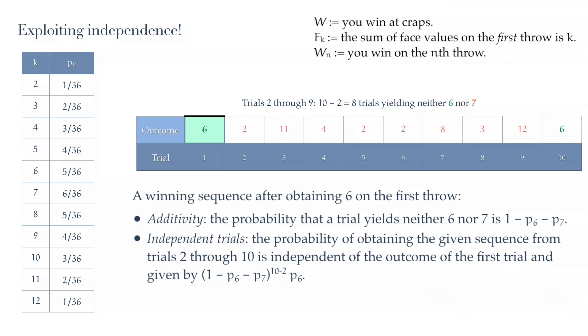Given that the first trial is a 6, shown shaded in the picture, what can we now say about the conjoint trials 2 through 9 followed by 10? Well, we know the last trial has to be a 6 because we are winning on the 10th trial, and so the probability of that is P6. We know the probabilities of each of the outcomes shown in the intervening trials is 1 minus P6 minus P7.